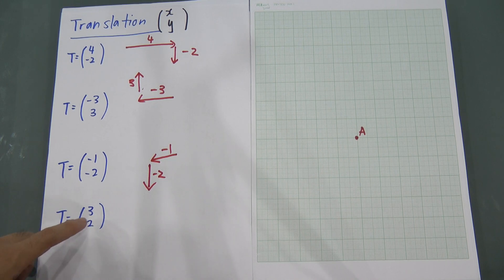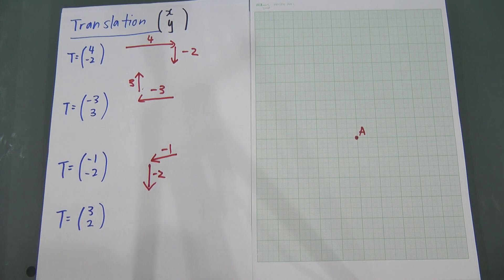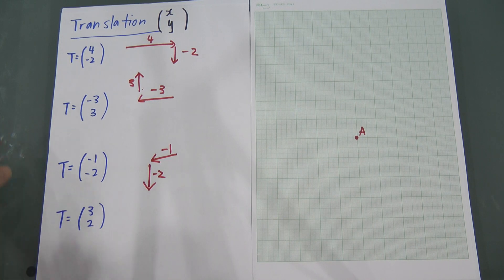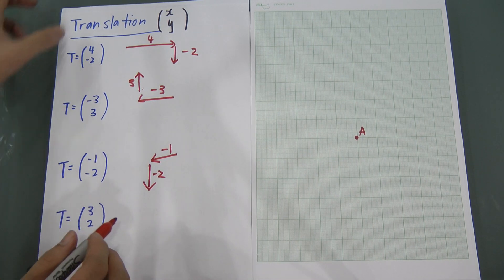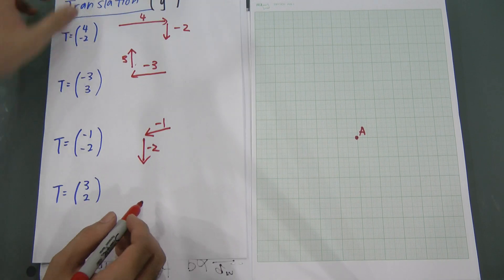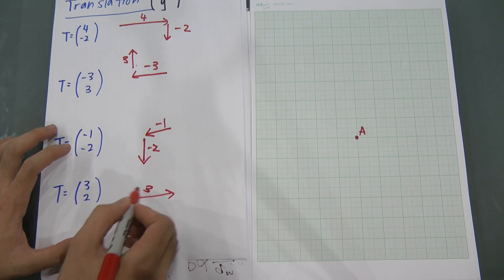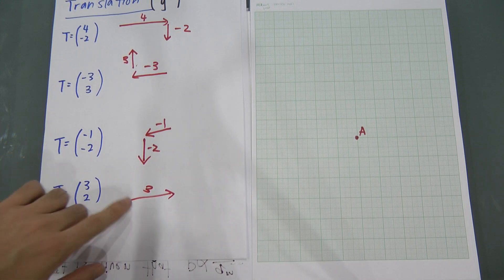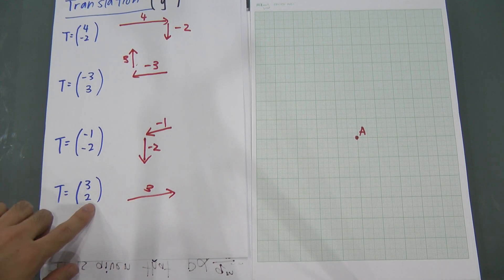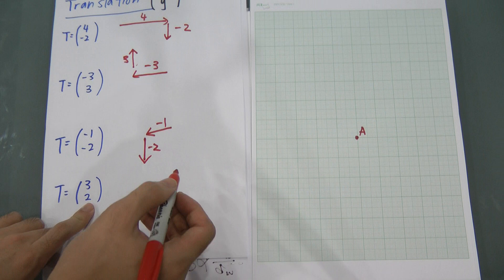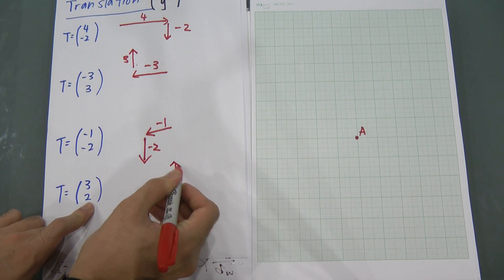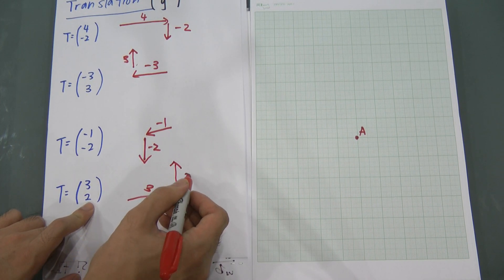And then if you see both values are also positive — three is for x, so positive x means you are moving to the right, three units. And then you see two on the bottom, two is for y, which means you have to go up two units.